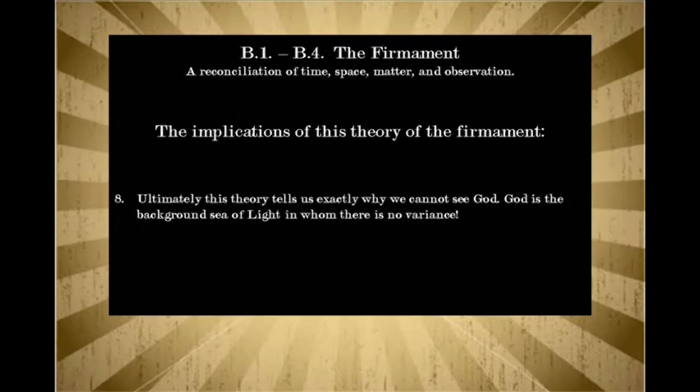Ultimately, this theory tells us exactly why we cannot see God. Because God is the background sea of light in whom there is no variance, no time or space. And this is why we cannot see God. This is why we cannot understand where He came from or try to explain those kind of things. Well, what made God? Where did He come from? Because we can only explain things based on our frame of reference as we're looking outward. We can't explain the background sea of light. We know it's there, but we cannot explain where it came from, how it came into existence, or the quality of that being.